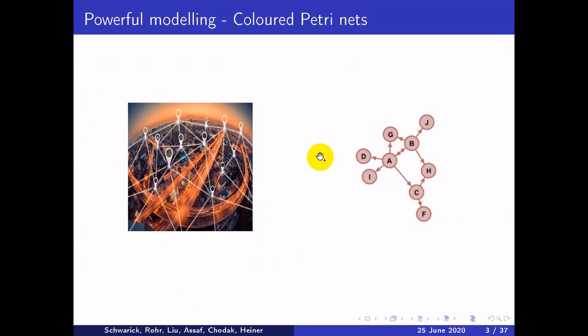Colored Petri nets have powerful modeling capabilities. I'm going to show you some of these capabilities using some colored Petri net models. The first model describes the connection between a set of cities. This kind of problem can be mapped into a directed graph, where the connection between two nodes can be described as a one-tuple.